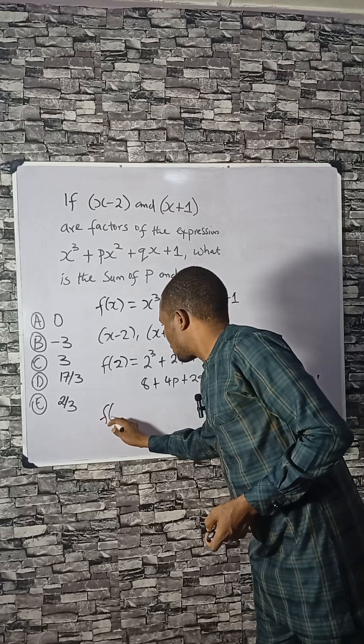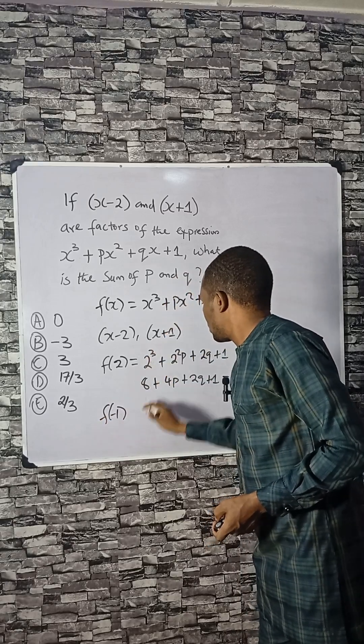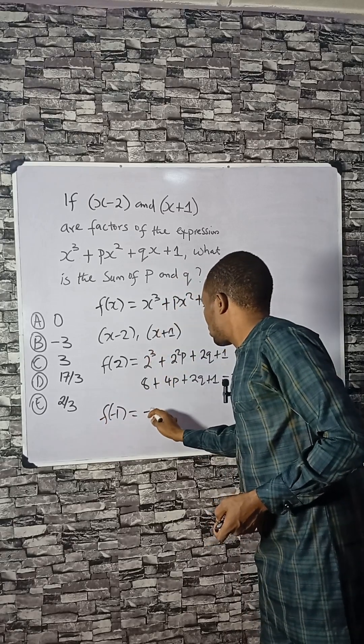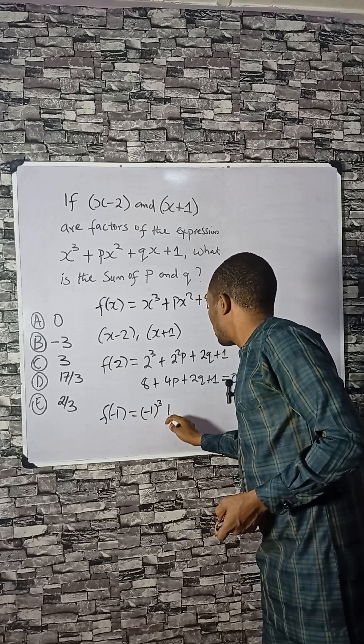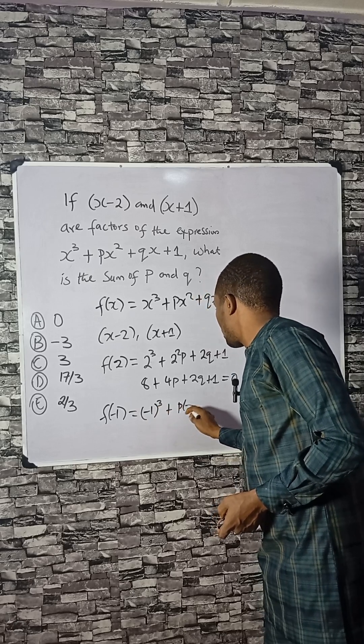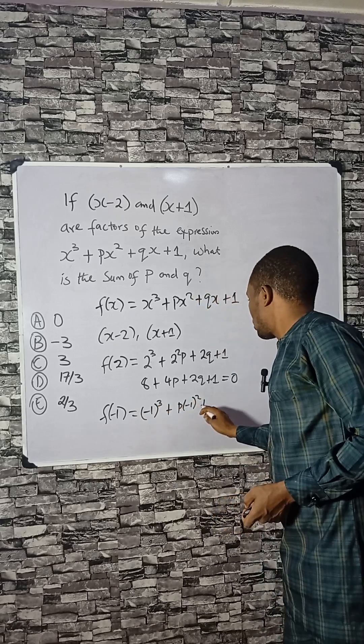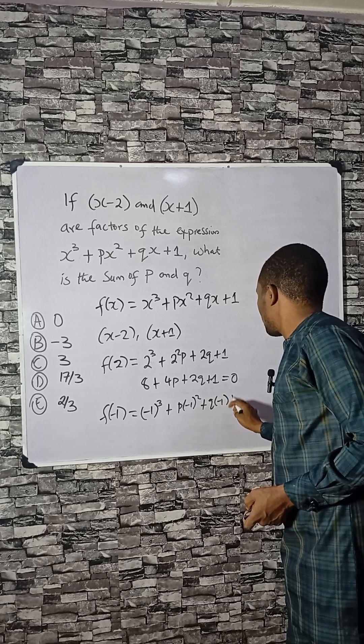Now let's consider the second one. That will be minus 1 cubed plus p times minus 1 squared plus q times minus 1 plus 1.